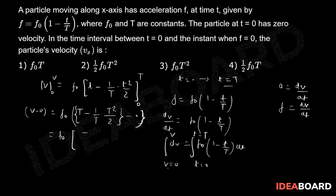This will be f₀ into T minus T by 2. So this will be v equals f₀ into T by 2. The velocity at that moment will be f₀ into capital T by 2. This should be the answer.